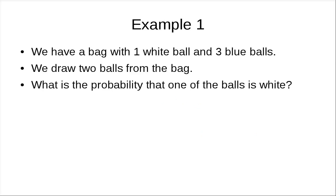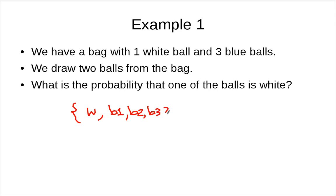Let's take a look at the first example. In this case, we have a bag with one white ball and three blue balls — B1, B2, B3 — and we draw two balls from the bag. We can think of this as a two-step process: we pick the first ball and keep it, and then pick the next ball. What is the probability that one of the balls is white?